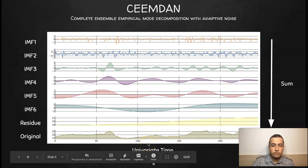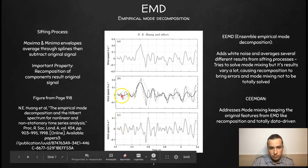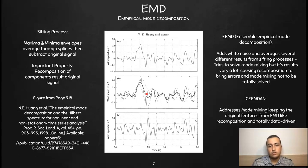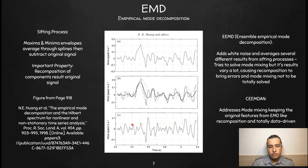We're considering a univariate time series. CEEMDAN is based on EMD, Empirical Mode Decomposition, whose core is the sifting process. The sifting process gets the maxima and minima envelopes for a given signal using splines, then averages them, and subtracts the original signal from that average to yield the first IMF. We repeat the process again and again until we reach some stop conditions, such as a number of iterations or an energy threshold.